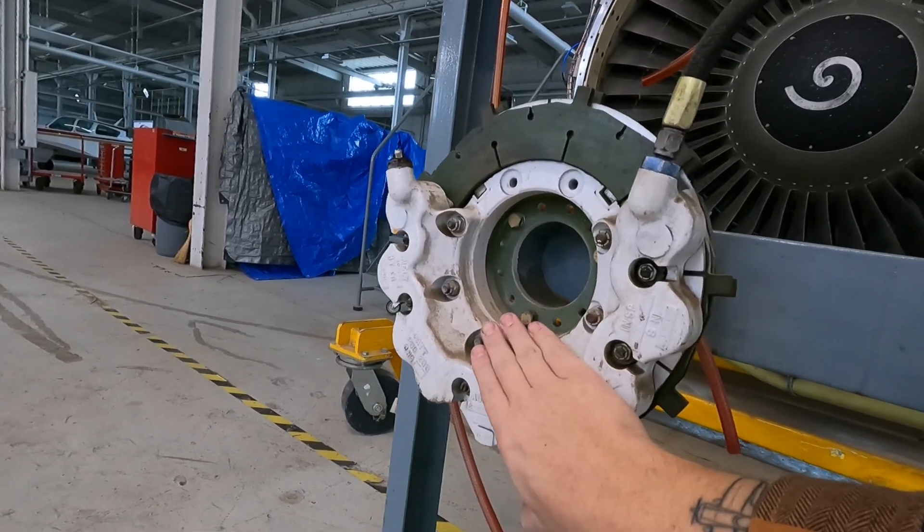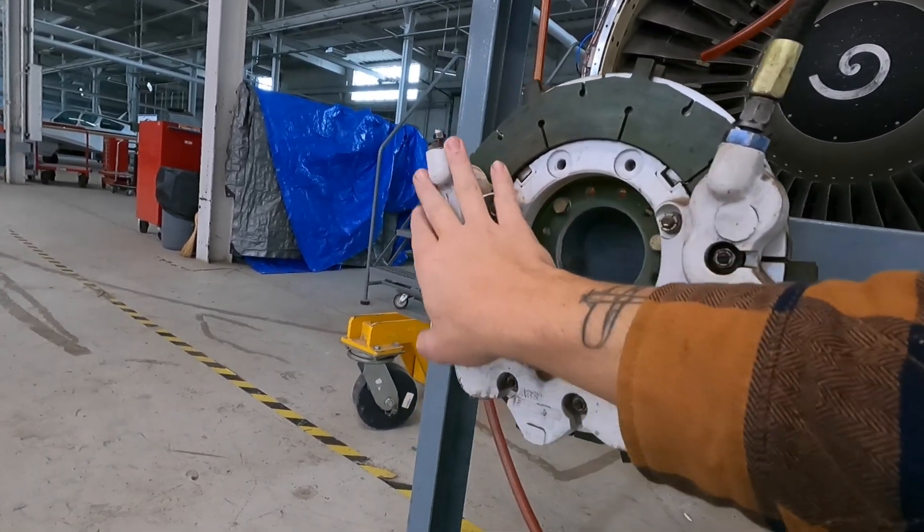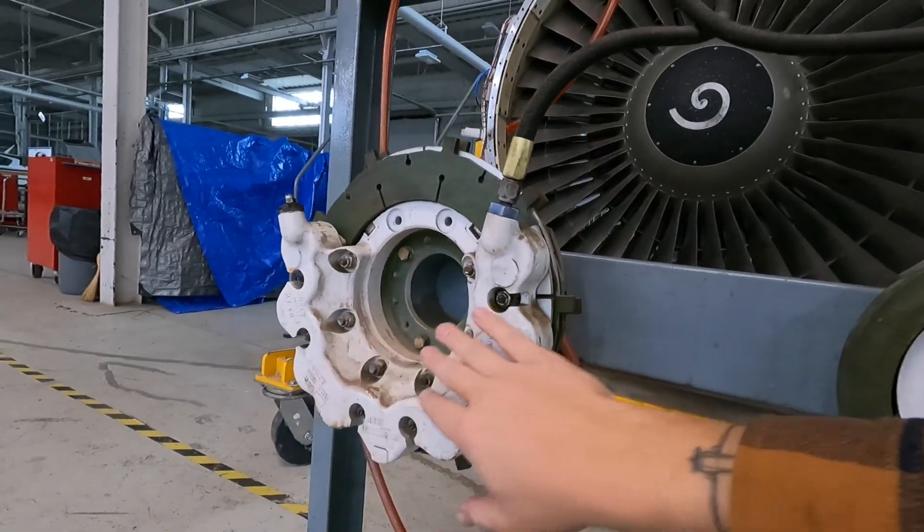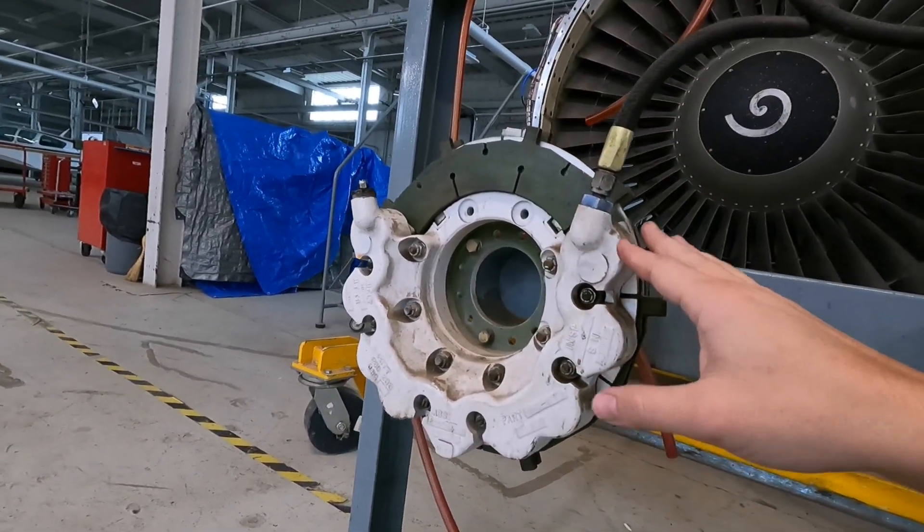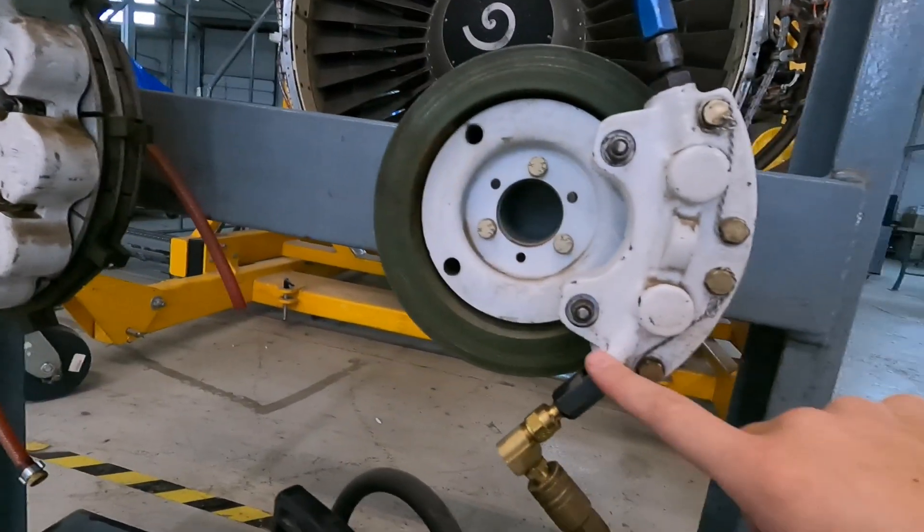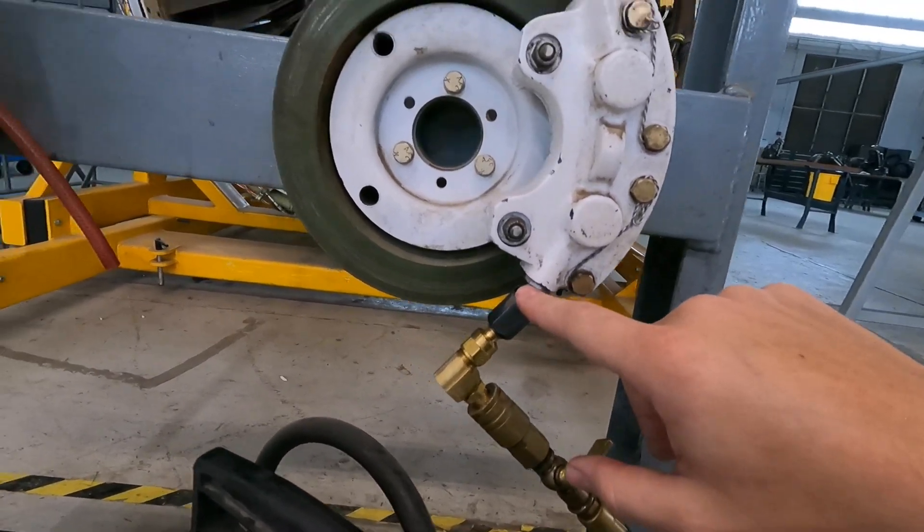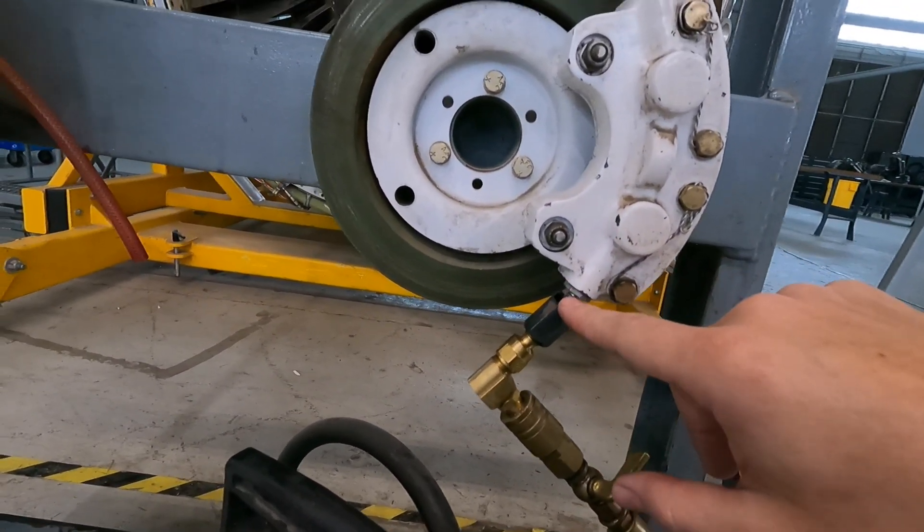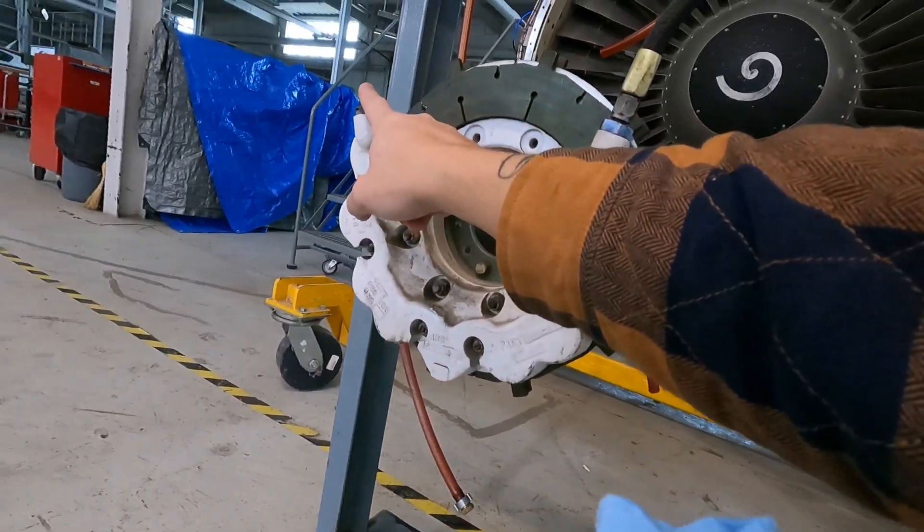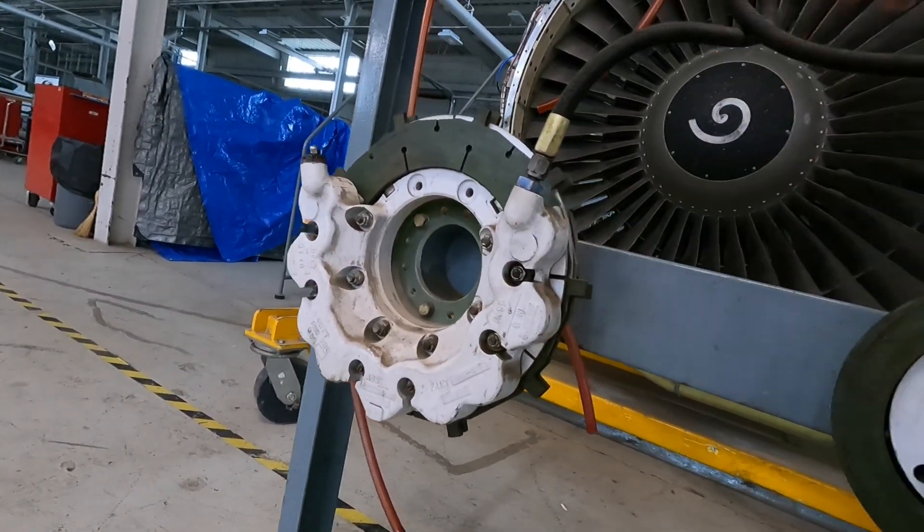You can also do what they call bench bleeding the caliper, where you fill this all with fluid before you even stick it on the airplane. And then you do like I did where you sort of get that fluid out of this fitting here so that there's no air being introduced at the bleeder. So that way when you open this, this is all already full of fluid, and you just have to fill the lines.